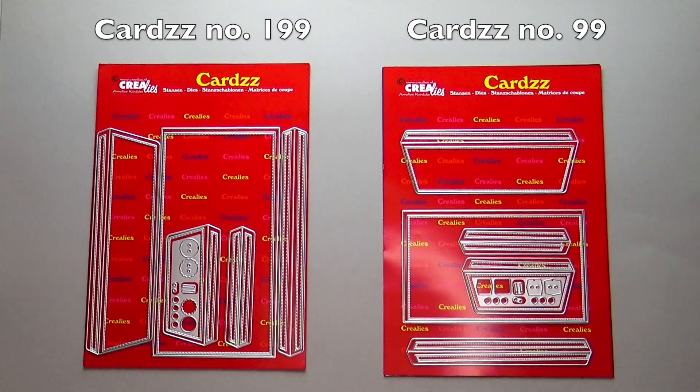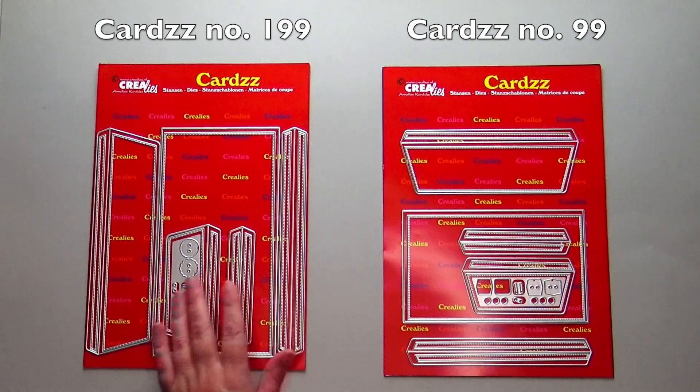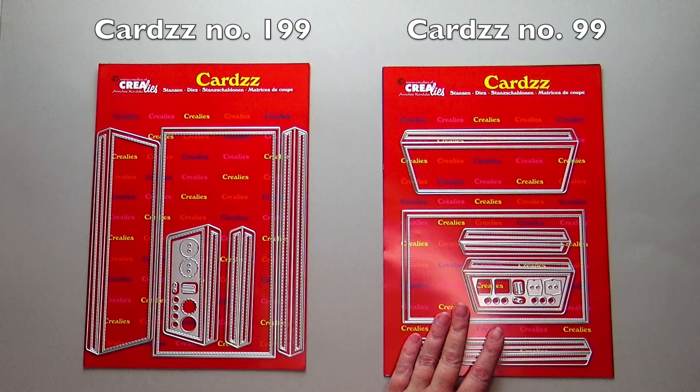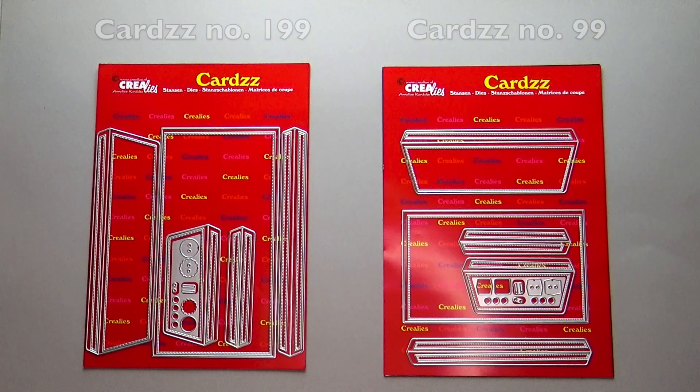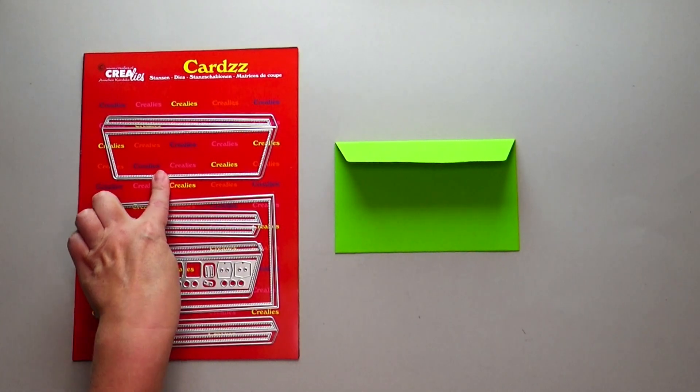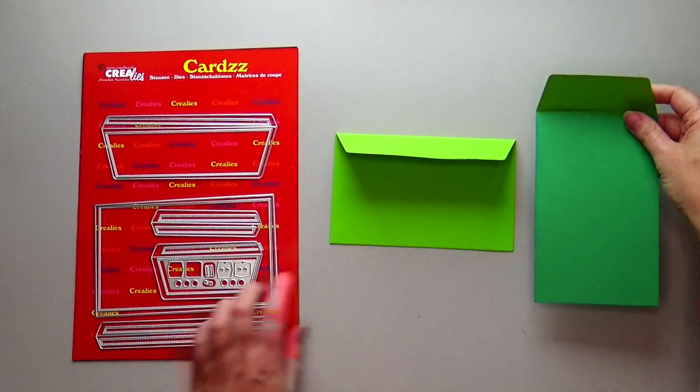Cards number 199 is the slimline envelope. Cards number 99 is the mini slimline envelope. You can make both envelopes horizontally or vertically.